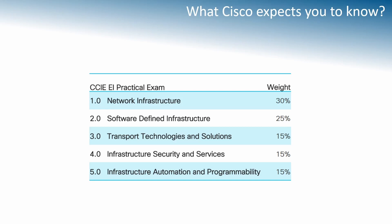Cisco expects that you are already an expert before taking the exam. Topics include network infrastructure, SDN — divided between SD-WAN and SD-Access — transport technologies, security and services such as ACL and SNMP, and automation and programmability. When Cisco updated the track, there weren't many resources available for SDN, especially SD-Access, which includes DNAC — the management device for the SDA solution.